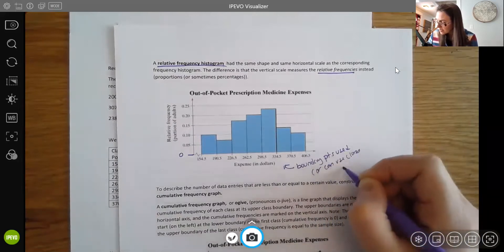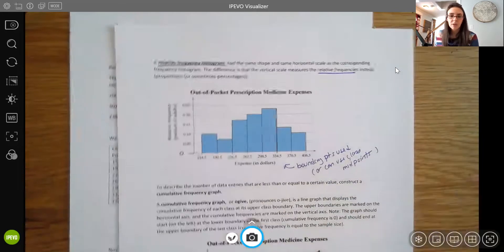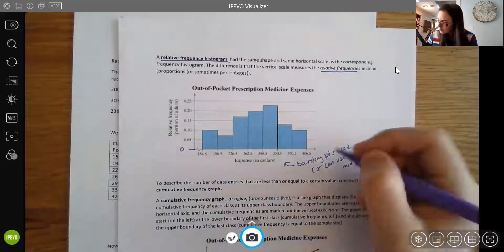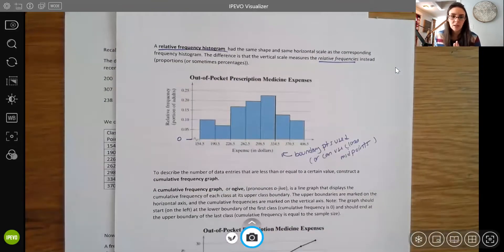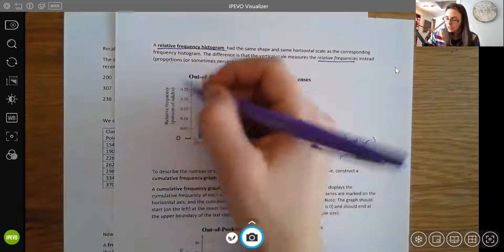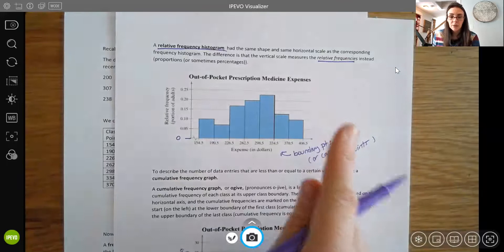But you can also use class midpoints. In this example, they're just choosing to use the boundary points here. But if you wanted to use those class midpoints, you could instead. So it works the same way. The only thing that's changing is that y-axis is going to be your relative frequencies.